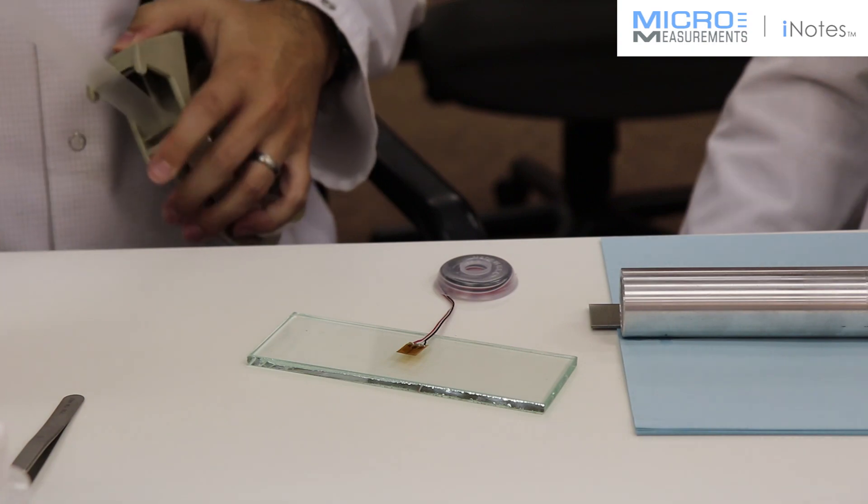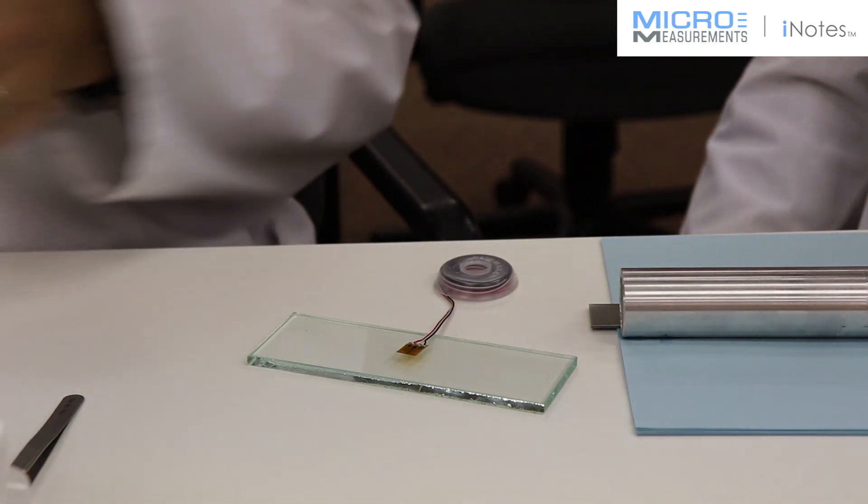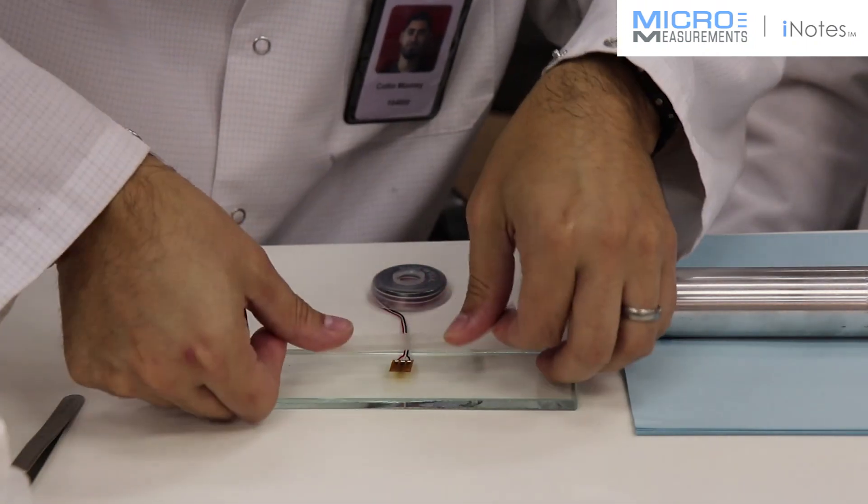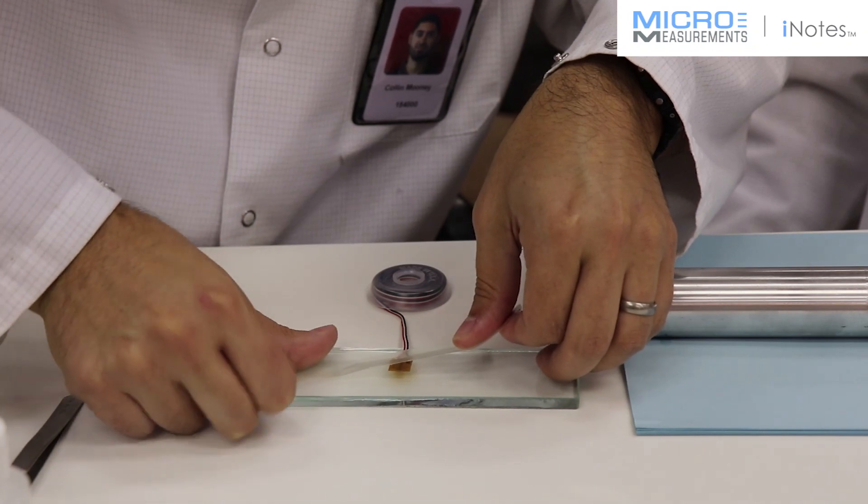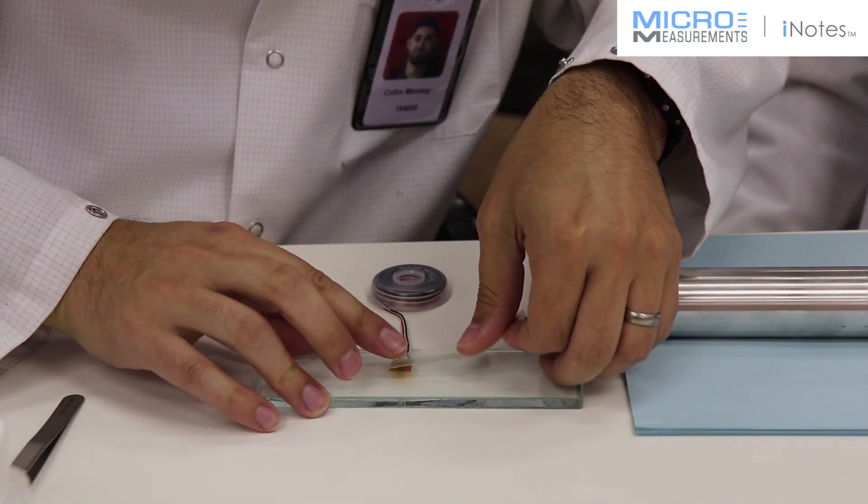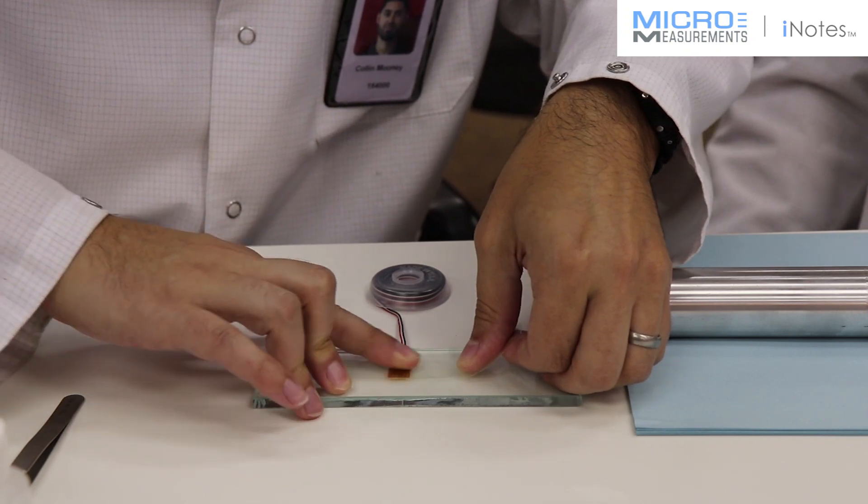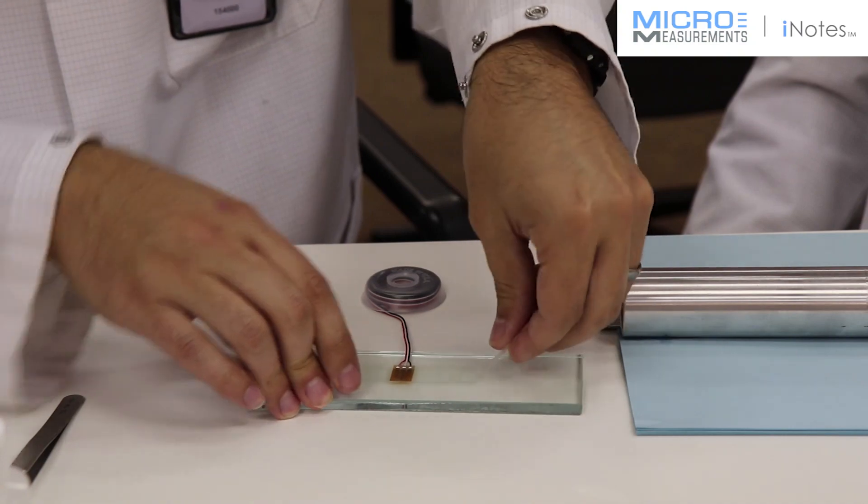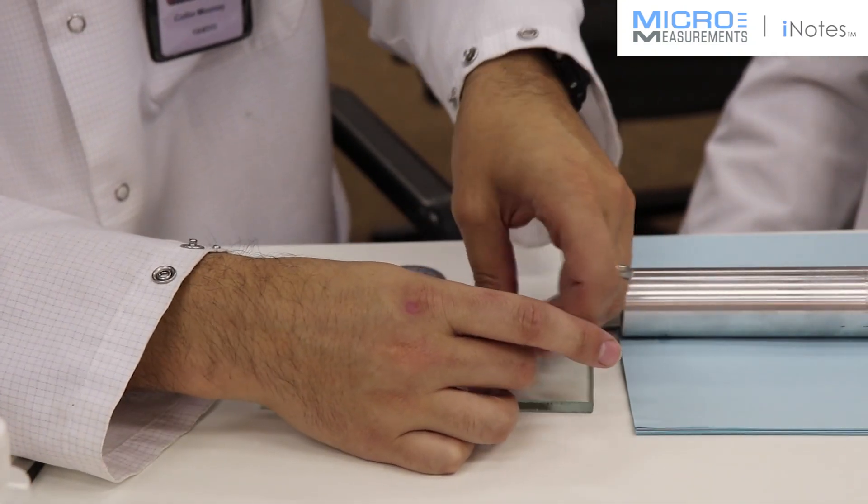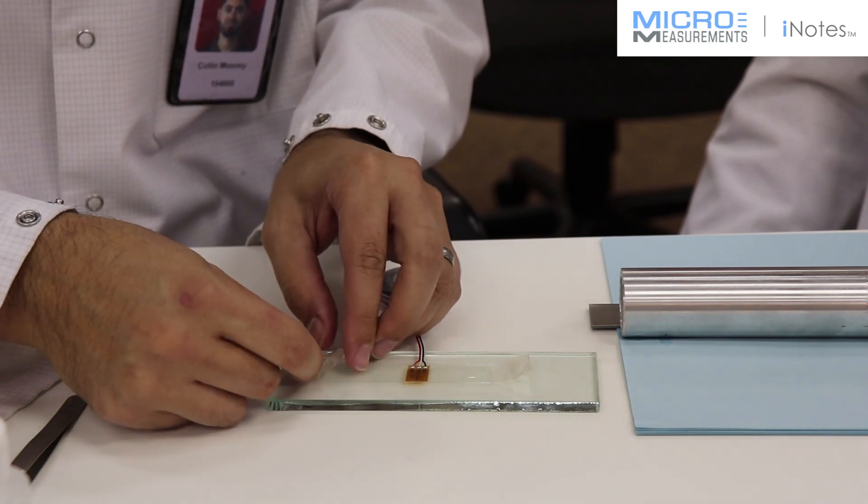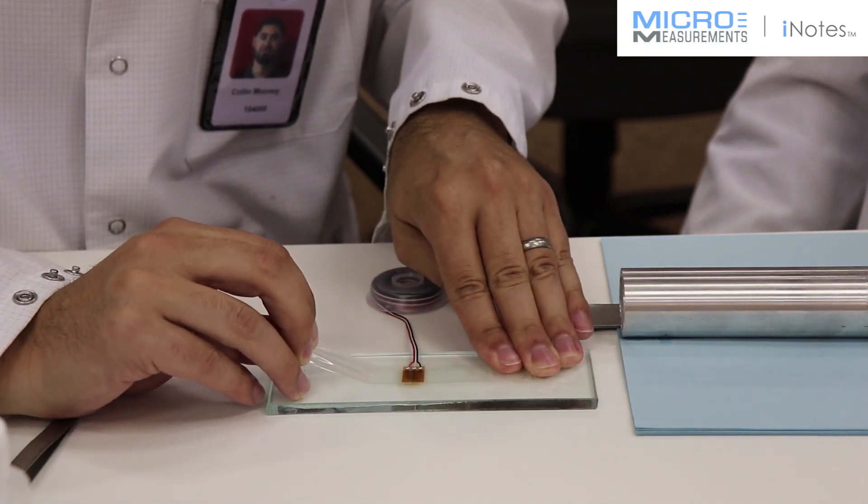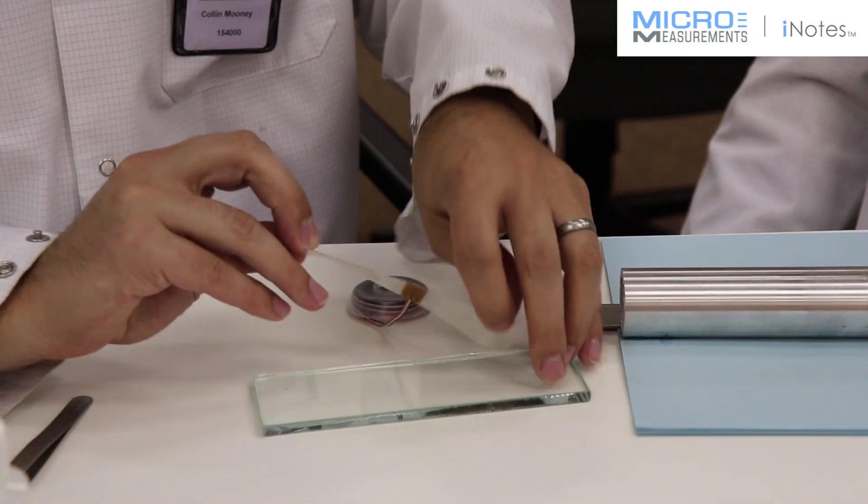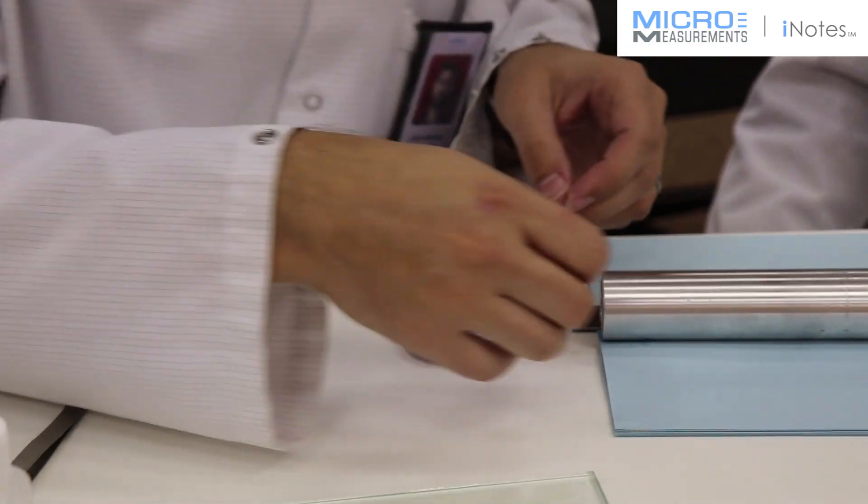He's going to take a strip of tape, four or five inches long. This is the PCT-3M tape. He's going to place it transverse to the long axis of this 187UV, so the tape will be in the hoop direction. We won't put the tape into a double curvature, which could damage the gauge. Lifting at a shallow angle, he's going to transfer the gauge from the glass plate. Now he's going to set it up, align it on the alignment mark.